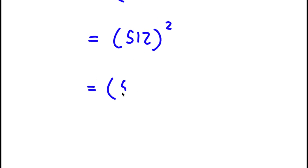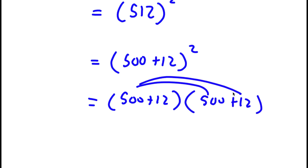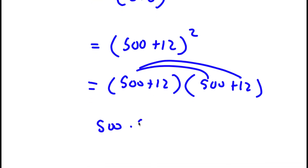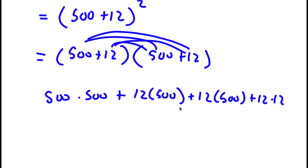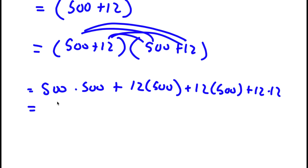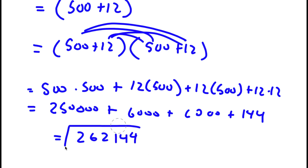Now 2 to the power of 9 equals 512, so I have 512 to the power of 2. I'm going to rewrite 512 as 500 plus 12, to the power of 2, which is the same as 500 plus 12 times 500 plus 12. Distributing the 500 gives 500 times 500 plus 12 times 500, and distributing the 12 gives plus 12 times 500 plus 12 times 12. That's 250,000 plus 6,000 plus 6,000 plus 144, which equals 262,144.